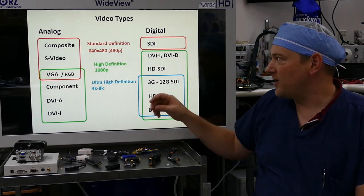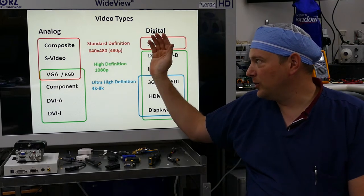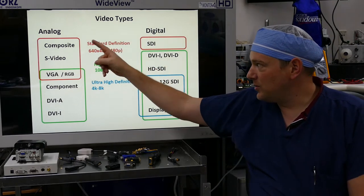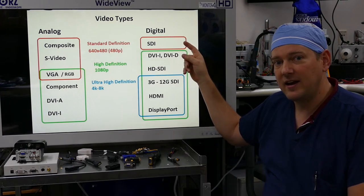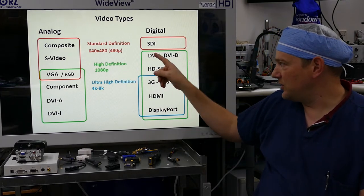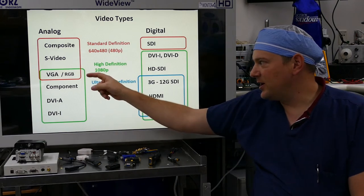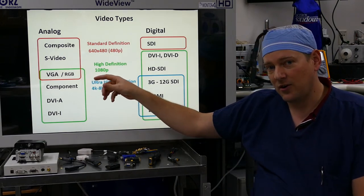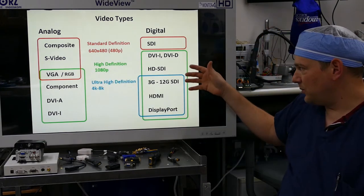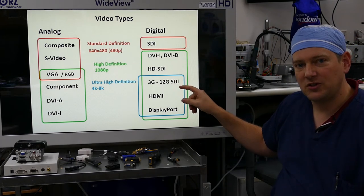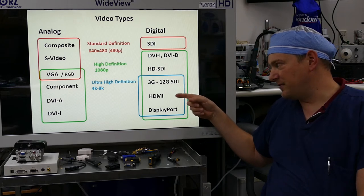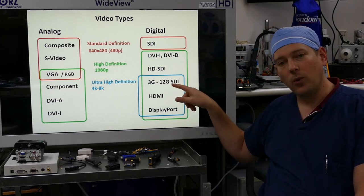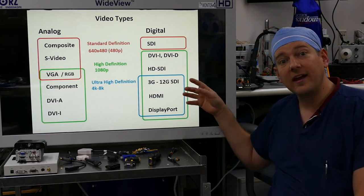As you can see on this chart, we have it also organized according to its definition. In the red, we have standard definition which is typically 640 by 480. In the green boxes, we have high-definition. VGA and RGB can also be high-definition. In the blue, we have ultra-high definition which is basically 4K. But some of the up-and-comers like the faster versions of HDMI, DisplayPort, and 12G SDI can handle 8K.